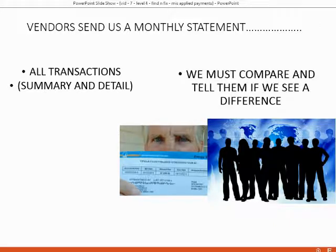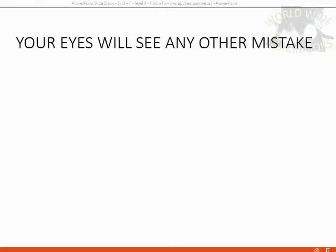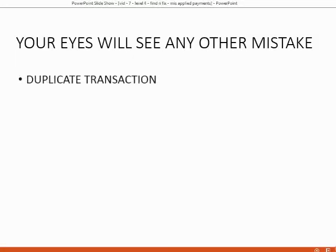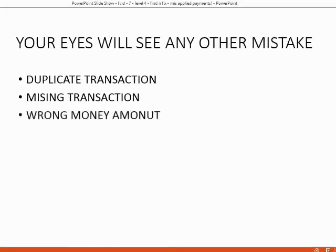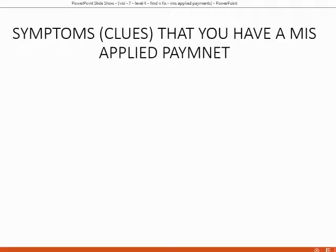Once we get the statement, we must compare it to our records, and if there's any difference, we have to tell the vendor. We focus on the mistake of a misapplied payment because any other mistake will be clear when you compare the vendor's monthly statement to our records. It will be very easy to see duplicate transactions, missing transactions, wrong money amounts, or wrong dates that place transactions in a different order.